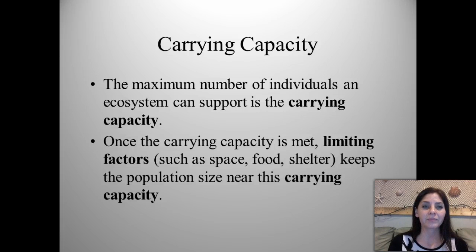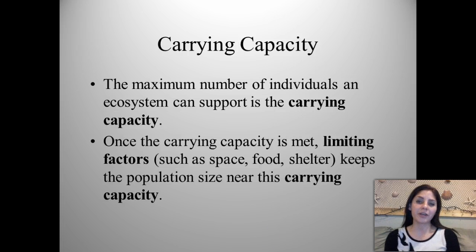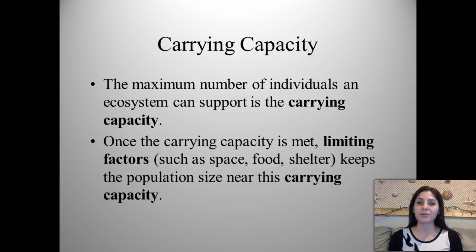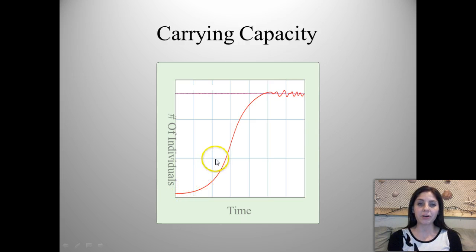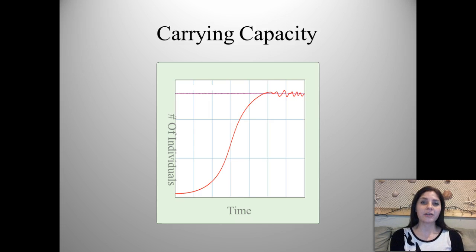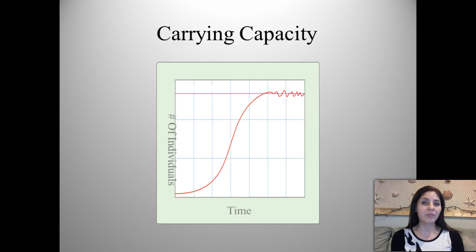Carrying capacity is the maximum number of individuals that an ecosystem can support. Once the carrying capacity is met, limiting factors such as space, food, and shelter are what keeps population sizes near their carrying capacity. If left unchecked, we get exponential growth, but eventually populations level out because of those limiting factors. Just like on Earth — humans will eventually reach carrying capacity, and the Earth will no longer be able to sustain our population; we'll be competing for food, clean water, and places to live.